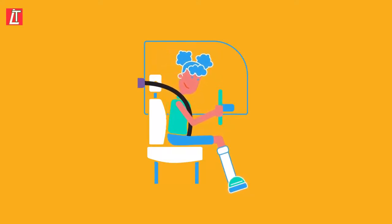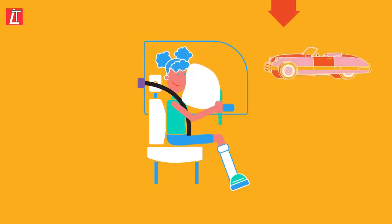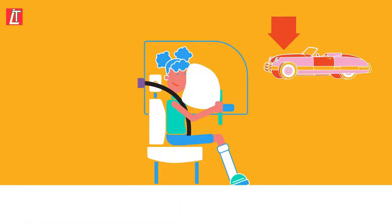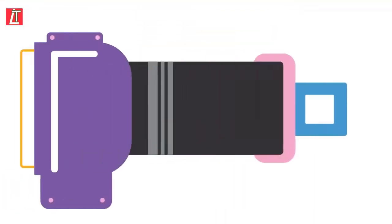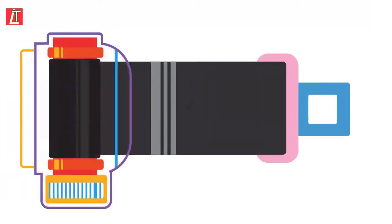Seat belts, airbags, and crumple zones all reduce the force by increasing the time over which the change takes place. So now you can see how a seat belt can save your life.